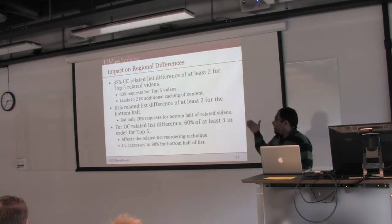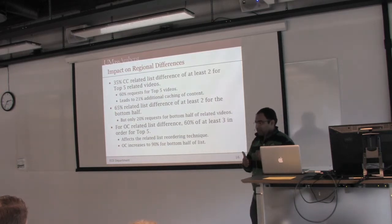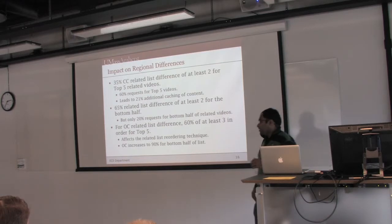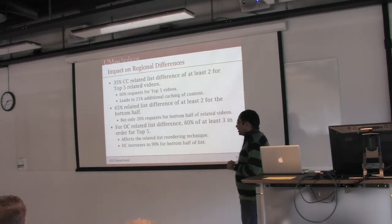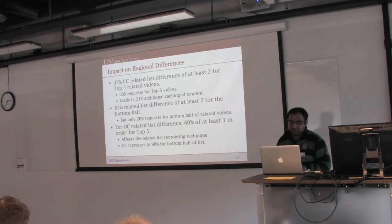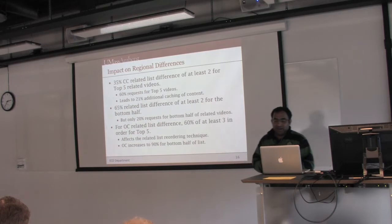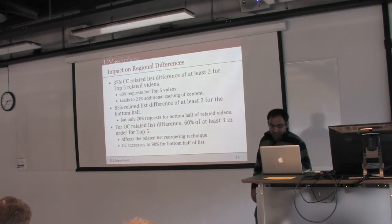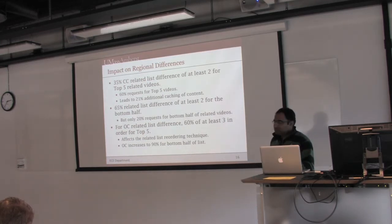The content change increases to 65% for the bottom half, meaning 65% of the time three of five related videos differ, but requests for the bottom half are only 20%. So additional caching to handle the bottom half's 65% difference is not worthwhile when aiming for a good cache hit rate. The same results hold for order change: 62% of the time at least three of the top five related videos differ in order. Still, caching or prefetching with 40% order agreement in the top five is better than prefetching the bottom half where there is 90% order change difference.